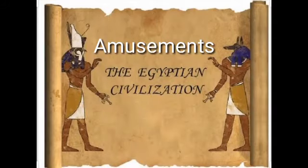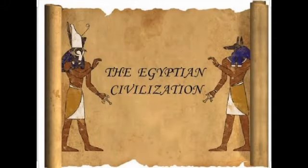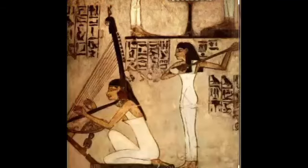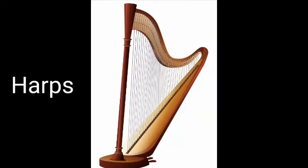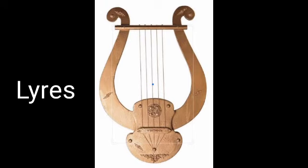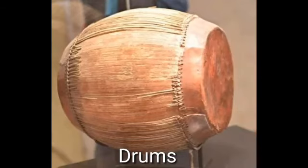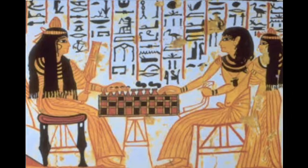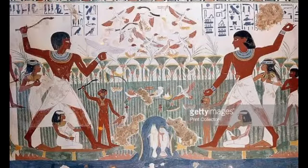Amusements of the Egyptian civilization: Singing and dancing were popular forms of amusement. People also played musical instruments such as harps, lyres, flutes and drums. Senet, a board game, was popular. Hunting and fishing were also popular pastimes.